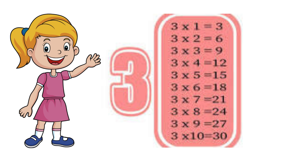Three ones are three. Three twos are six. Three threes are nine. Three fours are twelve. Three fives are fifteen. Three sixes are eighteen. Three sevens are twenty-one. Three eights are twenty-four. Three nines are twenty-seven. Three tens are thirty.